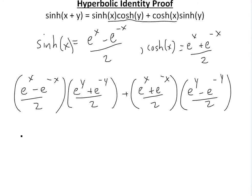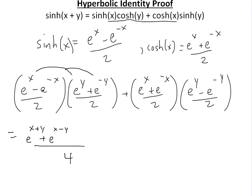Now we expand these out using the FOIL method. The denominator is 2 times 2, which is 4. Multiplying term by term: e to the x times e to the y gives e to the x plus y. Then e to the x times e to the negative y gives plus e to the x minus y. Next, negative e to the negative x times e to the y gives negative e to the negative x plus y. And the last term gives negative e to the negative x minus y, which is the same as negative e to the negative of x plus y. All divided by 4.